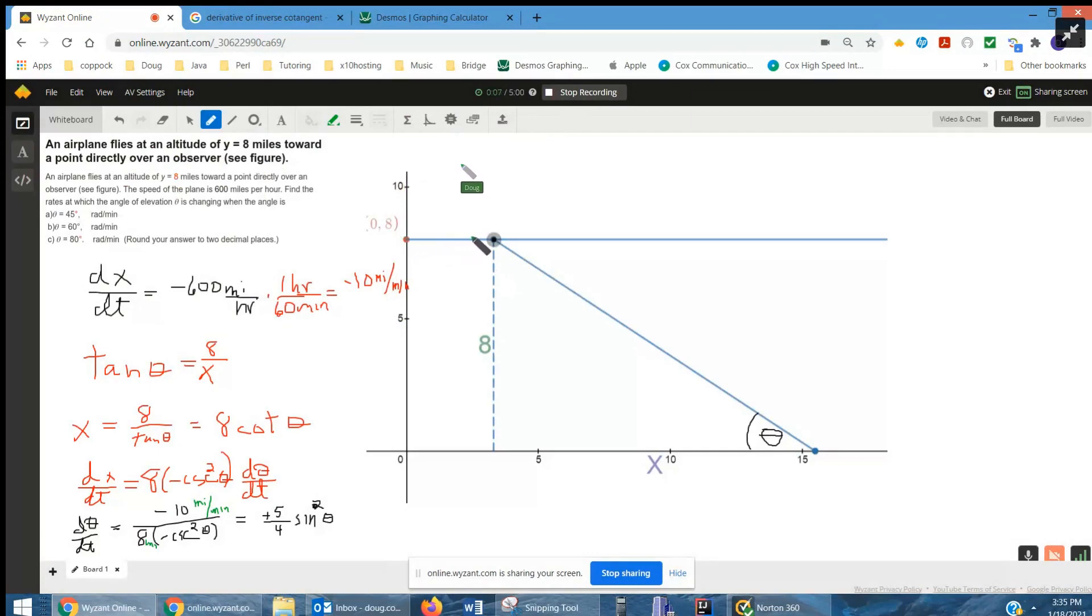We've got this plane at an altitude of 8 miles flying this way at a rate of 600 miles per hour. And we've got this observer down here at some distance, unknown distance from where the plane started. And this is the angle of elevation from the observer to the plane.